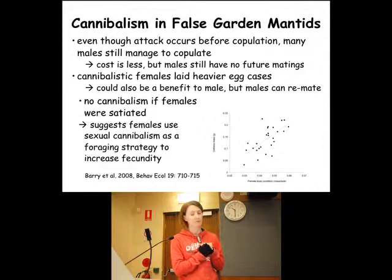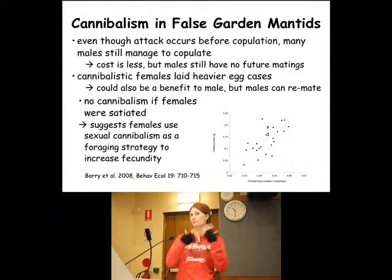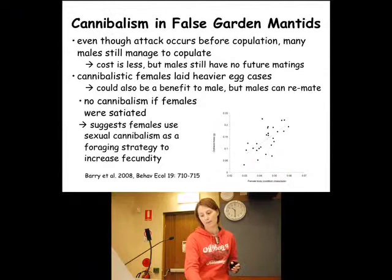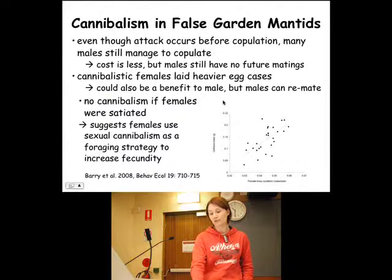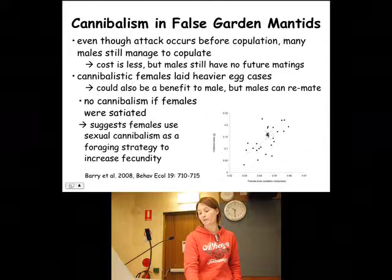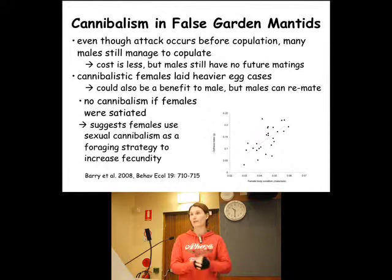What I found in terms of the advantage of cannibalism here is that cannibalistic females lay significantly heavier egg cases, and this translates into the number of offspring — the heavier egg cases obviously have more eggs and more offspring hatch from that. This graph shows female body condition versus egg case mass, and you can see a nice positive relationship — the heavier the female, the greater the mass of the ootheca, which is the egg case she will lay. So the more you eat, the more males you cannibalize, the heavier you become, and the bigger the egg case that you lay. That's the advantage.